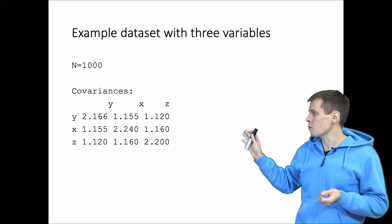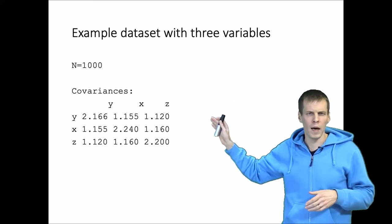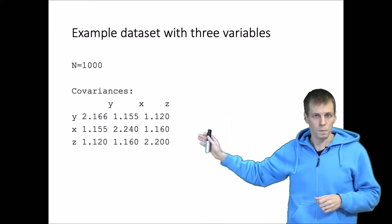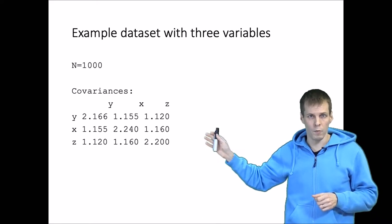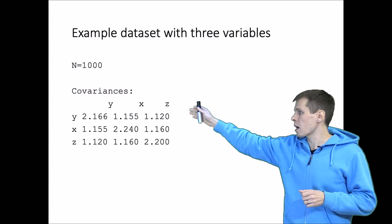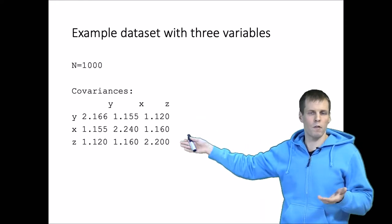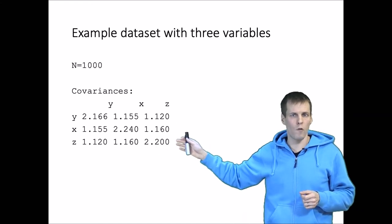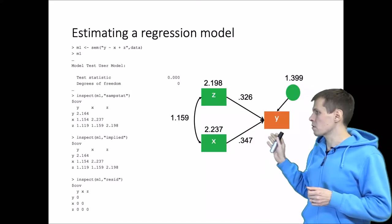Our example data has 1000 observations. The number of observations doesn't really matter, but I generate 1000 just to have sufficient statistical power to clearly reject incorrect models. We have three variables X, Y, and Z that roughly have the same variances and are correlated to roughly the same degree — this is the covariance matrix. Let's first estimate the regression model.